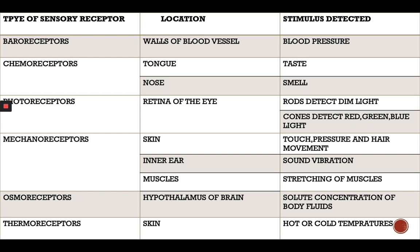Chemoreceptors are located in the tongue and nose, and they are responsible for taste and smell. Photoreceptors are in the retina of the eye — there are photoreceptors called rods and cones that detect light, whether in the dark or in bright light, enabling us to see.